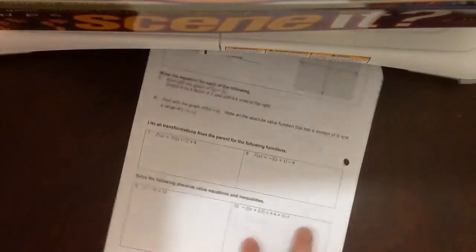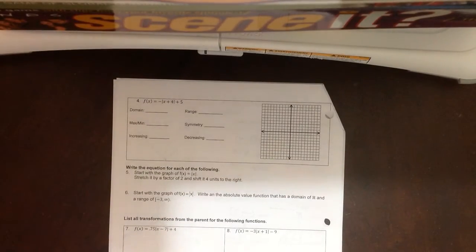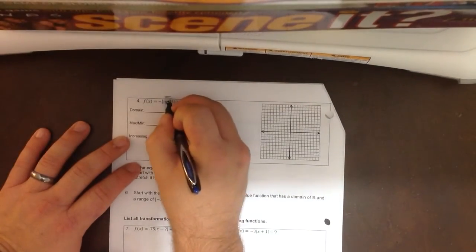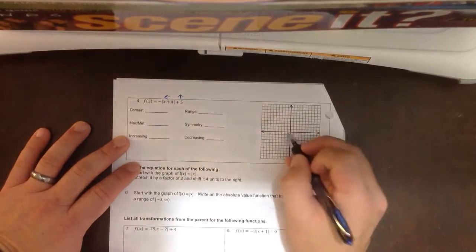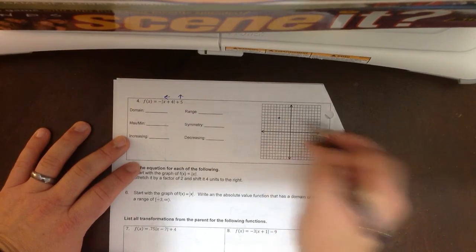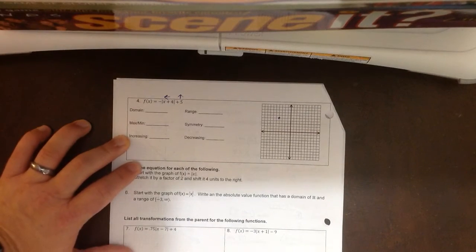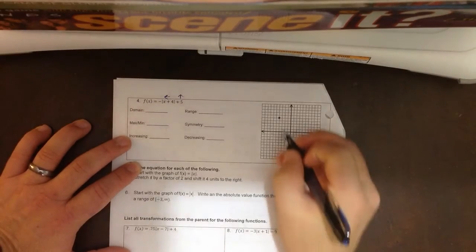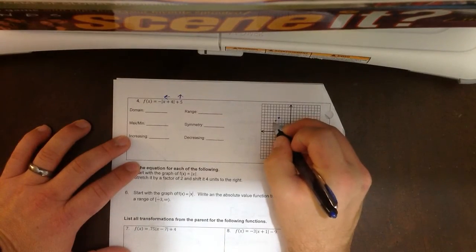Alright, number 4. The last graph. On this one, it's going to shift left 4 and up 5. There's my new vertex. The slope, it is negative. So it's going to open downward, and it's negative 1.